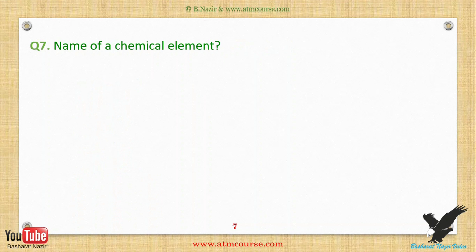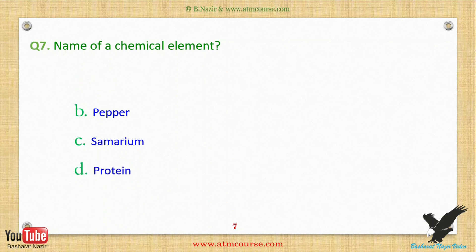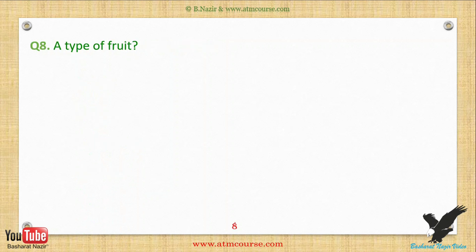Question seven: Name of a chemical element — choose from one of these answers. Question eight: A type of fruit — choose from one of these answers.